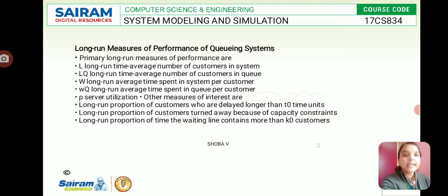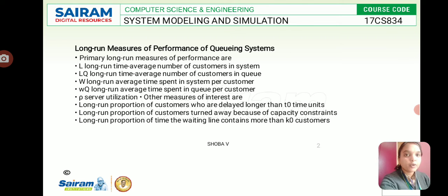There are primary long-run measures of performance. Several parameters are defined for easy understanding: L is the long-run time average number of customers in the system; LQ is the long-run time average number of customers in the queue; W is the long-run average time spent in the system per customer; and WQ is the long-run average time spent in the queue per customer.